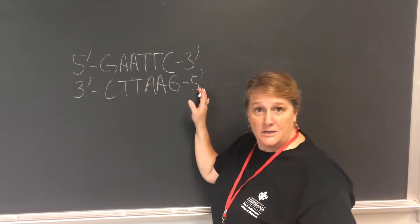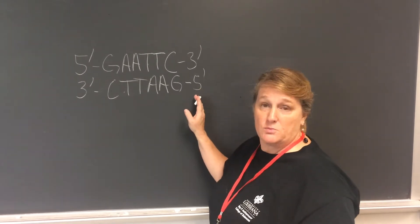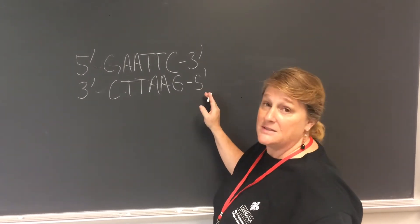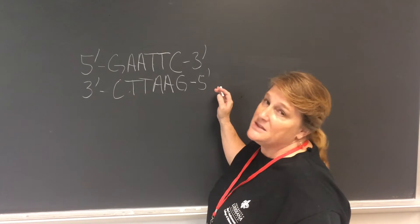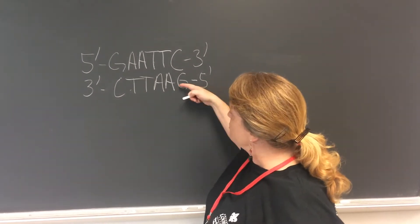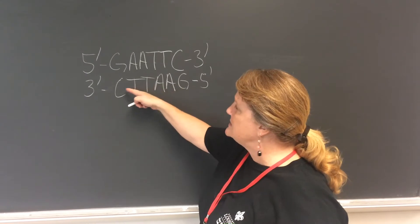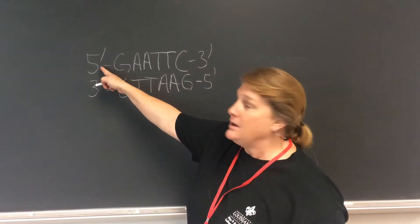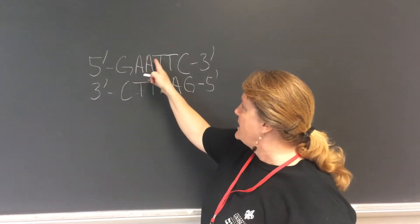So what you're looking at here is a palindrome, and what that is is something that's the same in the opposite direction. Notice here we've got going in this direction G-A-A-T-T-C, and we can come back—here's the five prime G-A-A-T-T-C.